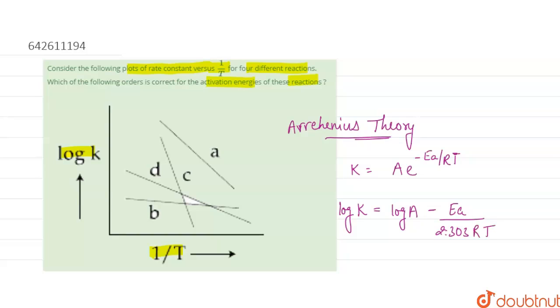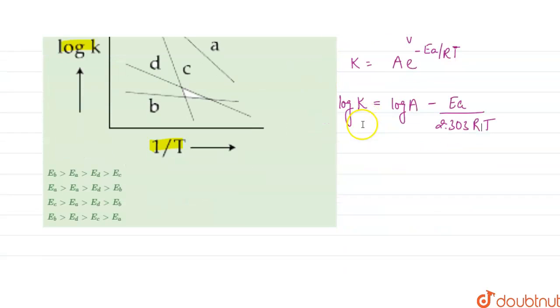Now if we see this equation, this equation looks like y equals mx plus c type. So this value log A is c, log k is y.